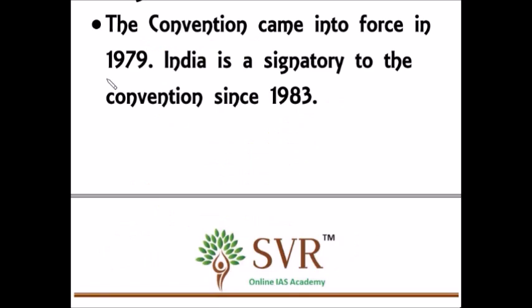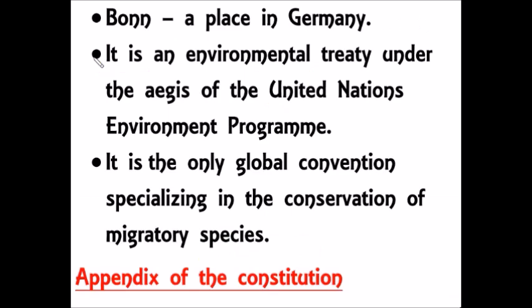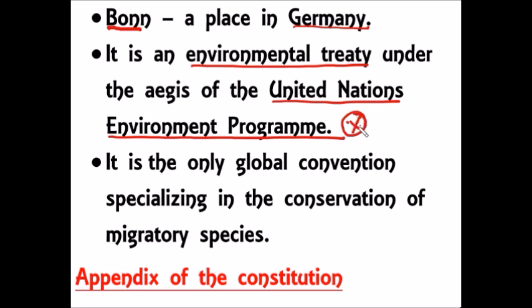The Bonn Convention on Conservation of Migratory Species came into force in 1979 — this is an important prelims point. India became a signatory to the convention in 1983. Bonn is a place in Germany, and the Bonn Convention is an environmental treaty under the aegis of the United Nations Environment Programme — this is another important prelims point.